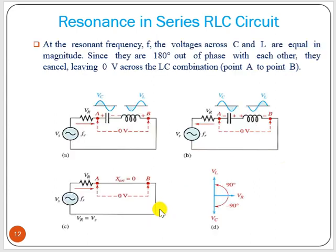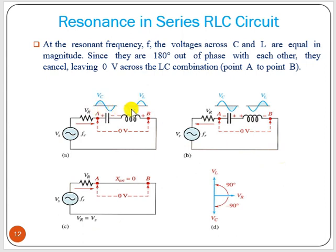Plotting Z versus frequency: Z is higher at low and high frequencies, reaches a minimum equal to R when XL = XC at the resonant frequency. At the resonant frequency, the voltages across the capacitor and inductor are equal in magnitude but 180 degrees out of phase with each other, so they cancel, leaving zero volts across the LC combination.